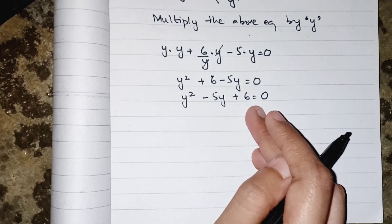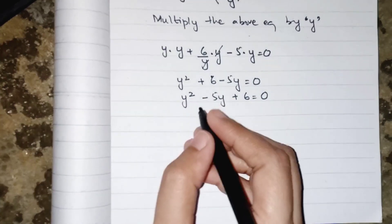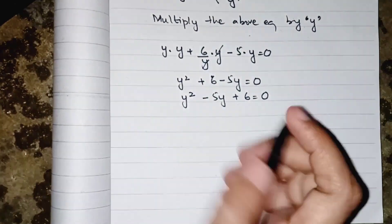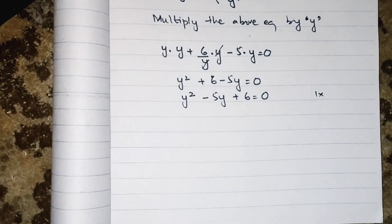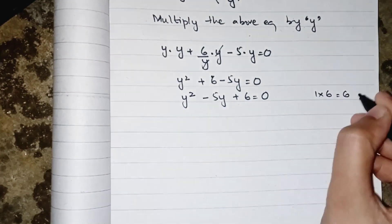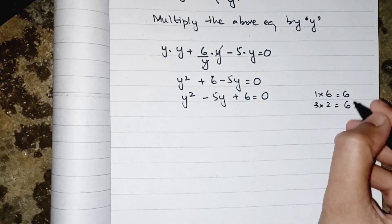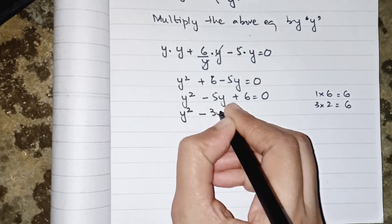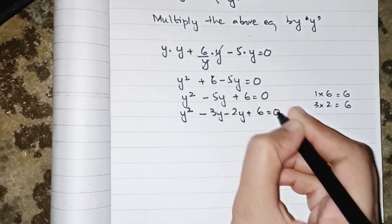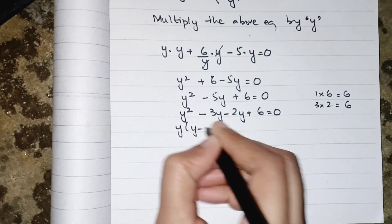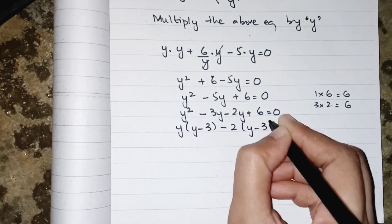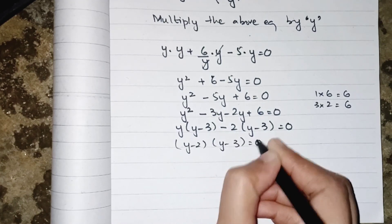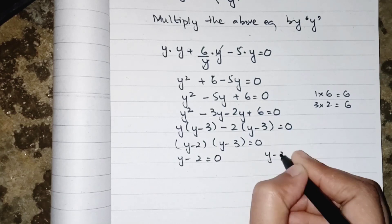Since this is a quadratic equation, we apply the factorization method to find the value of y. The factors of 6 are: 6 and 1 (sum = 7), or 3 and 2 (sum = 5). We need a sum of 5, so we choose 3 and 2. Rewriting: y² − 3y − 2y + 6 = 0. Taking common factors: y(y − 3) − 2(y − 3) = 0.